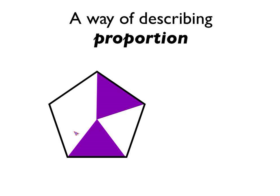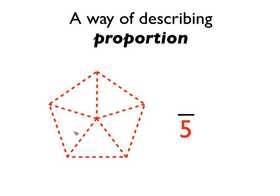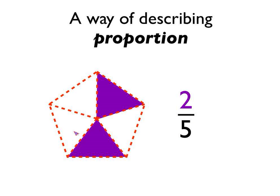One final one now. This pentagon — parts of it, a proportion of it — has been shaded in purple. What proportion? Let's divide the pentagon up into five equally sized pieces, so the denominator of our fraction will be five. And then you can see that two of those five pieces have been shaded in purple, so the numerator must be two. So the proportion of the pentagon that is shaded in purple is two over five, or two fifths.